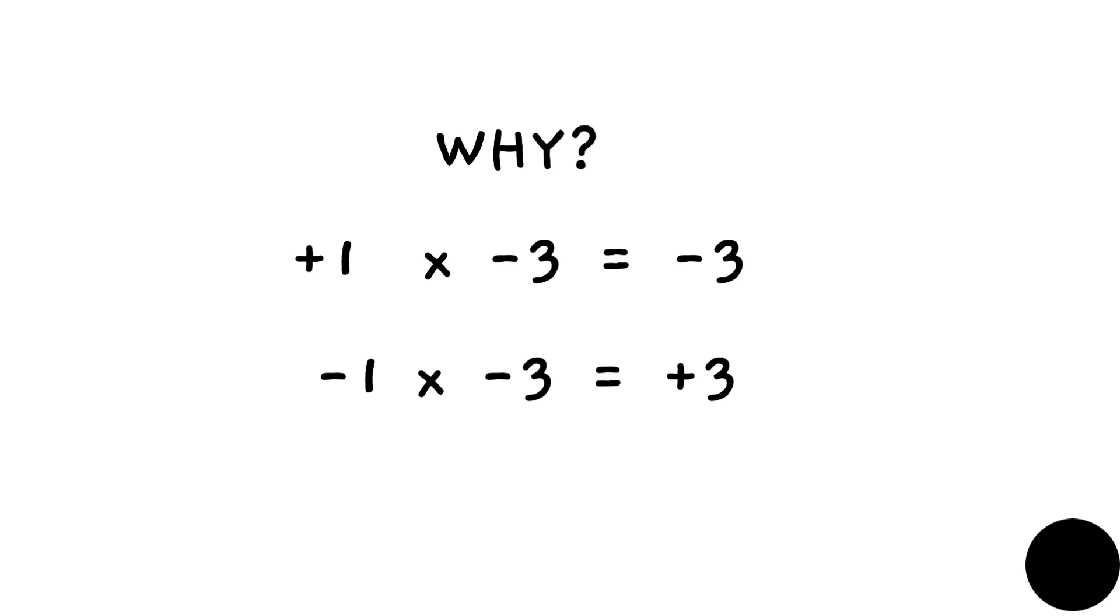The rules of multiplication say that if you multiply a positive number by a negative number you get a negative number, but if you multiply two negative numbers you get a positive number. But why? What's the intuition behind these rules? Let's explore.